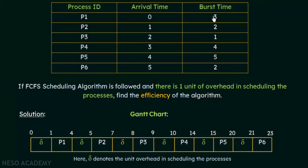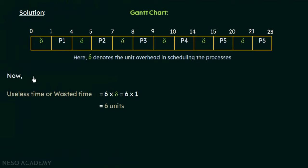The entire time it took for these 6 processes to complete execution was 23 units of time. To calculate the efficiency of this algorithm, we first calculate the useless or wasted time. The 'del' periods — the overhead in scheduling — represent time not utilized by any process. We have 6 dels, each of 1 unit of time, so 6 units of time are wasted.